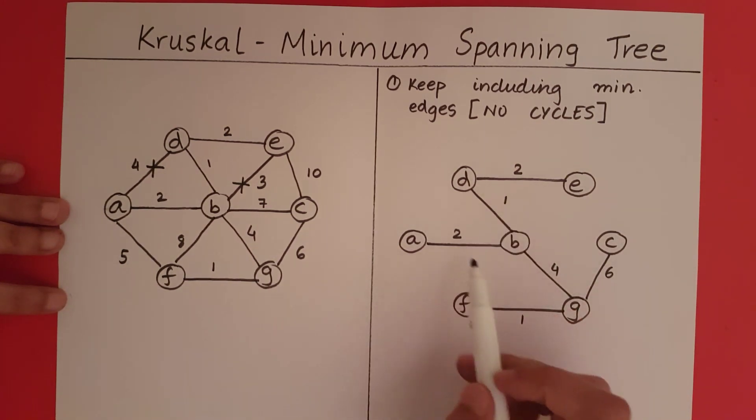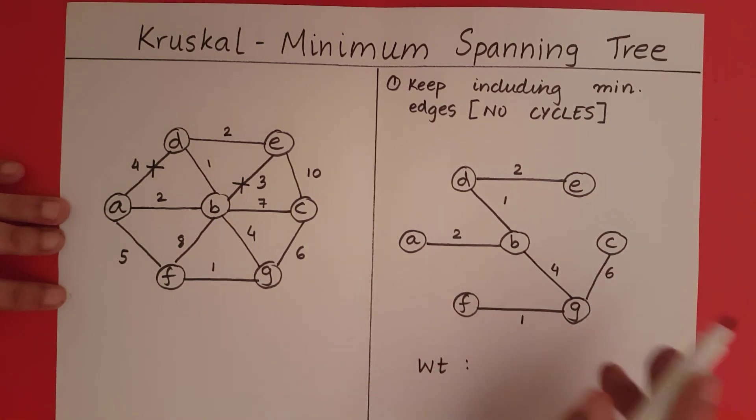So now we have connected all the vertices in our minimum spanning tree. Now we can stop. So what is the weight for this minimum spanning tree? We have 6 plus 4 plus 2 plus 2 plus 1 plus 1. We will get the weight as 16.